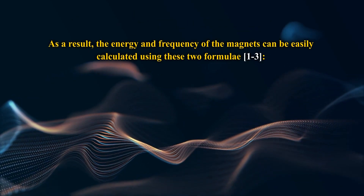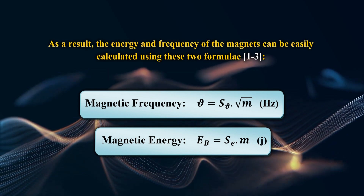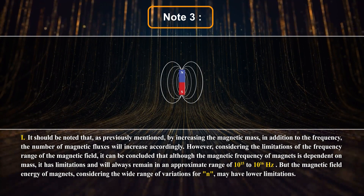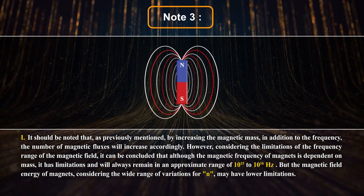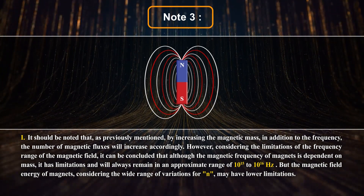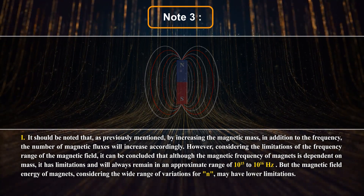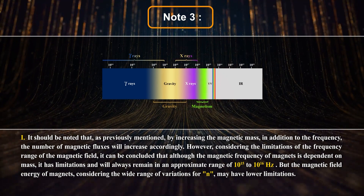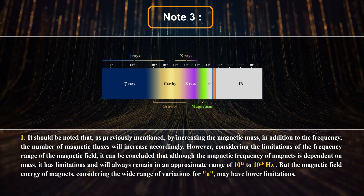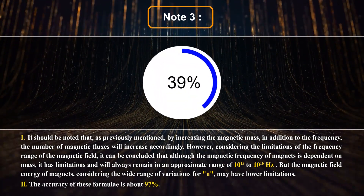As a result, the energy and frequency of the magnets can be easily calculated using these two formulas. Note 3: It should be noted that by increasing the magnetic mass, in addition to the frequency, the number of magnetic fluxes will increase accordingly. However, considering the limitations of the frequency range of the magnetic field, it can be concluded that although the magnetic frequency of magnets is dependent on mass, it will always remain in an approximate range of 10 to the power of 15 to 10 to the power of 16 Hz. But the magnetic field energy of magnets, considering the wide range of variations for N, may have lower limitations. The accuracy of this formula is about 97%.